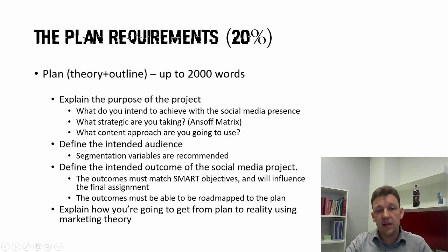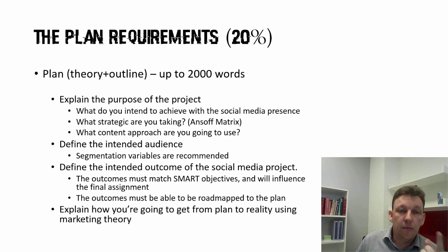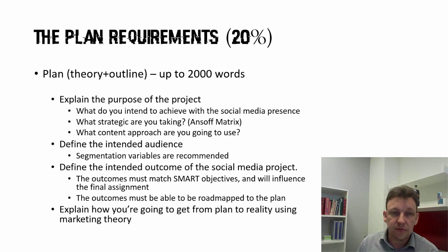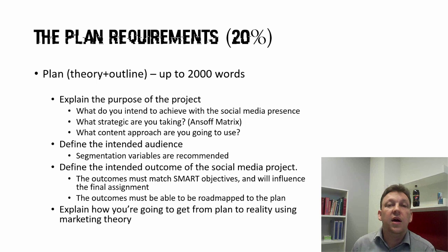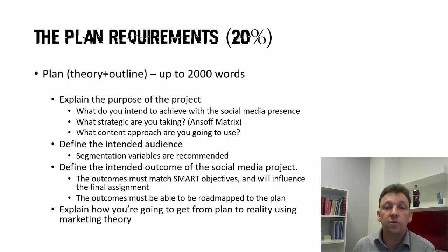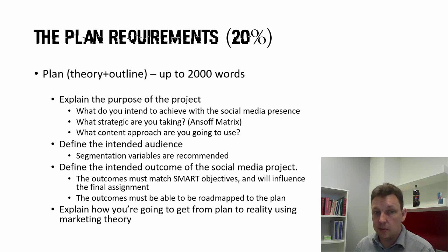Here are the sub-components of the plan. Purpose, intention, strategy, content approach — tell me about your audience, who you want, and have some idea who you're pitching to. It's so much easier to write content when you know who the audience is. Give me an outcome, and the outcome has to be on the SMART objective agenda — it's got to be able to be measured. Your outcomes need to be able to be converted to metrics, and it's a marketing essay, so use your marketing knowledge.